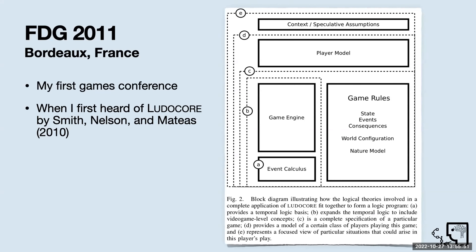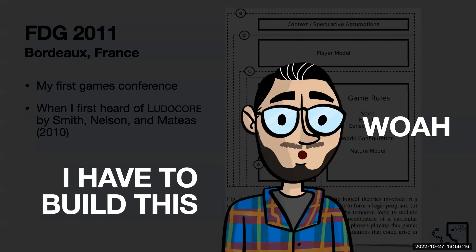Ludogor was actually published the year before. If you're not familiar with it, Ludogor is basically like a mechanics-focused game engine. You can encode mechanics in a temporal event calculus and prove things about your mechanics as part of using the system. That is actually taken from the paper itself, showing a block diagram for different components. So I kid you not, when I first saw this, my reaction was: oh my gosh, I have to build this. This was so cool. My first games conference — I had no idea what I was doing — and I was really excited about this potential idea.